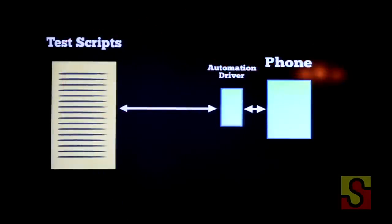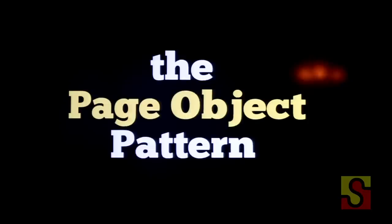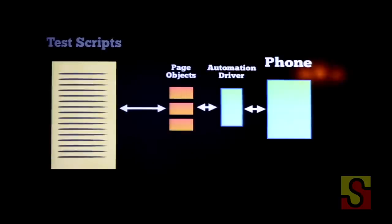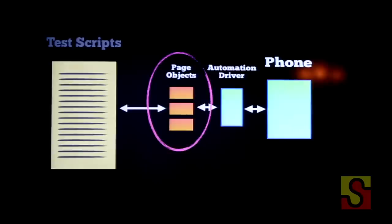So what can we do to introduce some abstractions? People in the web world have been facing this challenge for a while, and a very popular pattern for solving this is a thing called the page object pattern. So here we are again with our test scripts talking directly to our automation driver. We want to introduce some abstraction, so we're going to create these little things called page objects. The role of these page objects is to abstract and encapsulate the low level user interface and testing details of your application — essentially each page object is exposing an automation interface for those high level testing scripts to use.